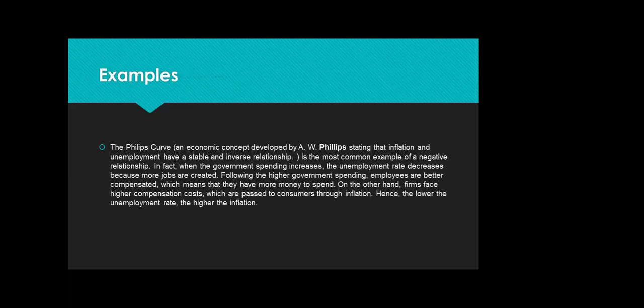The Phillips curve is an economic concept developed by A.W. Phillips stating that inflation and unemployment have a stable and inverse relationship. It's one of the most common examples of a negative relationship. When government spending increases, the unemployment rate decreases because more jobs are created. Following higher government spending, employees are better compensated, which means they have more money to spend. On the other hand, firms face higher compensation costs which are passed to consumers through inflation.